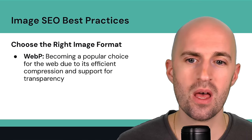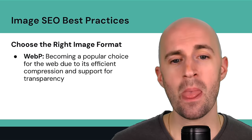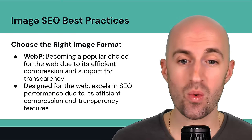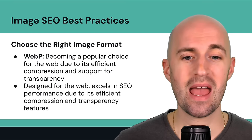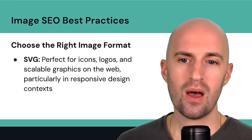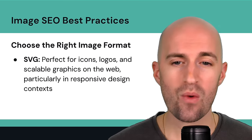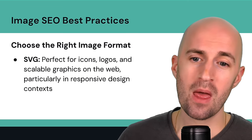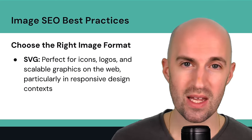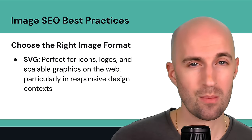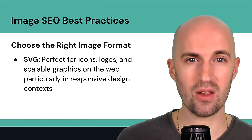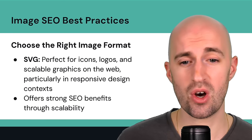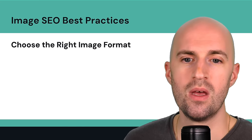WebP is becoming more and more popular for the web because of its efficient compression technologies and transparency support — it's even more efficient than JPEG and PNG. It's designed from the ground up for the web and excels in SEO performance. SVG, or Scalable Vector Graphics, is perfect for icons, logos, and any graphics that need to scale larger or smaller without losing quality — ideal for responsive design. A logo can look perfect on a small mobile screen and a large desktop without pixelation. SVG also offers strong SEO benefits through scalability and small file size.